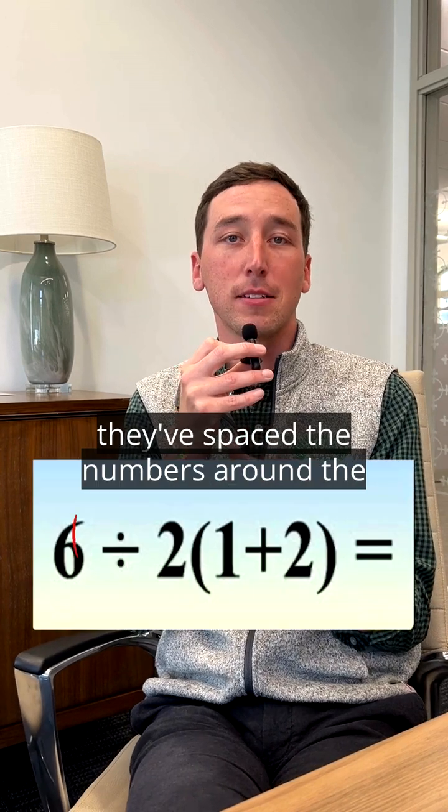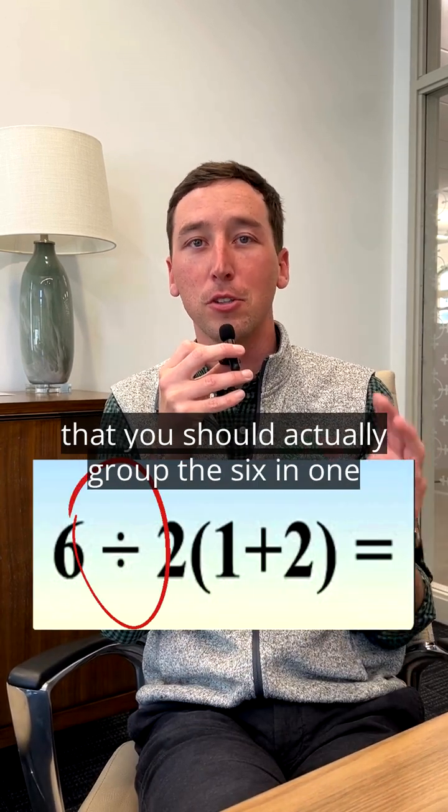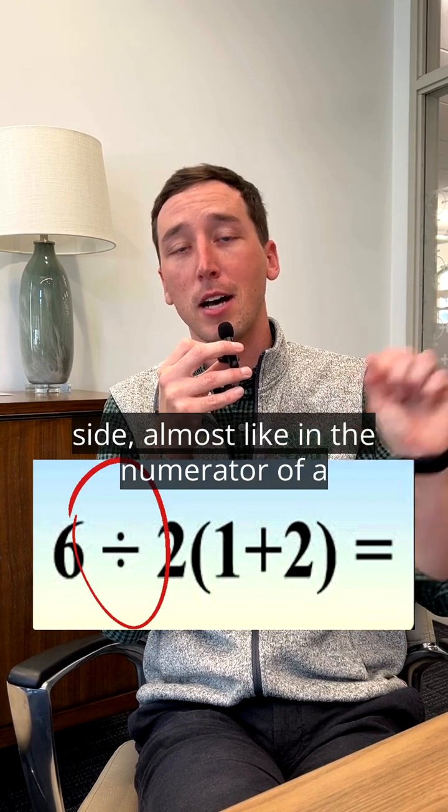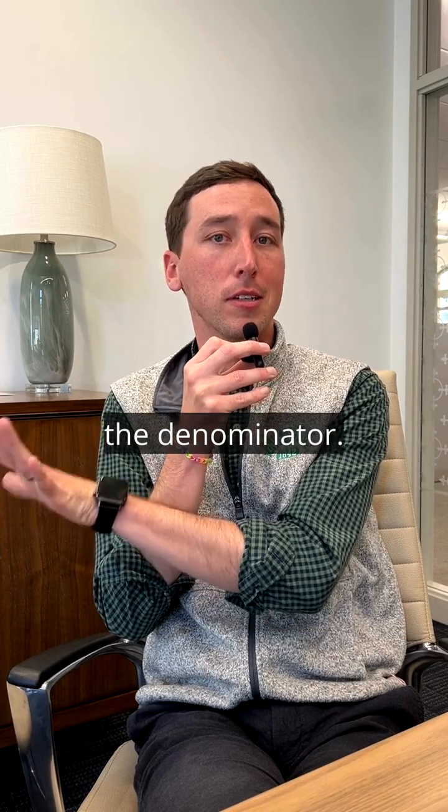But they're tricking you here with the way that they spaced the numbers around the division sign. You have this perceptual cue that you should actually group the 6 on one side, almost like in the numerator of a fraction, and then the rest of the equation in the denominator.